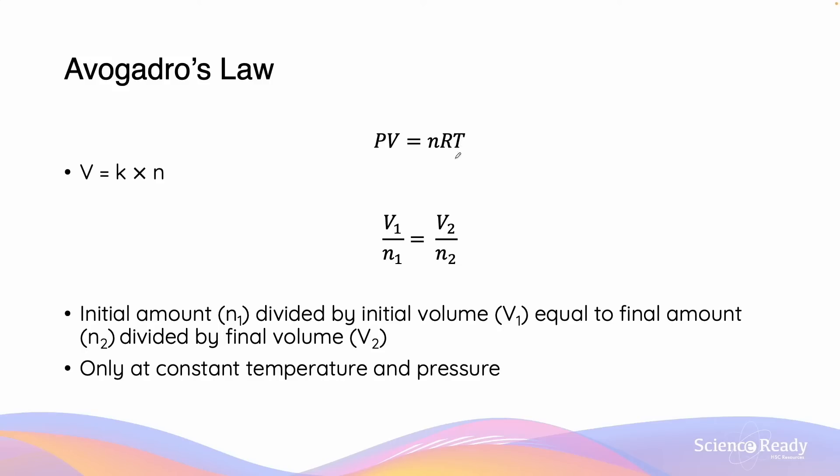We can also use this relationship to define another relationship, which is that V1 on N1 equals to V2 on N2, and we can do that to calculate how changes in V or N will affect one another in a system where temperature and pressure are held constant.